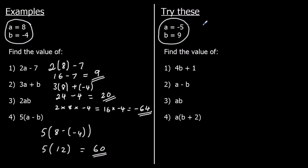Question 1: we've got 4b plus 1. That's 4 times b, so 4 times 9 plus 1. 4 nines are 36, and 36 plus 1 is 37.